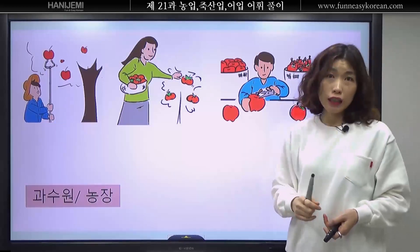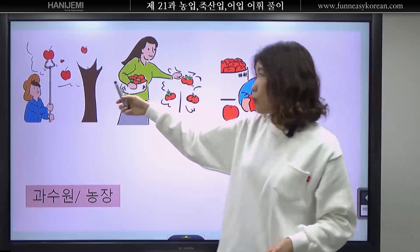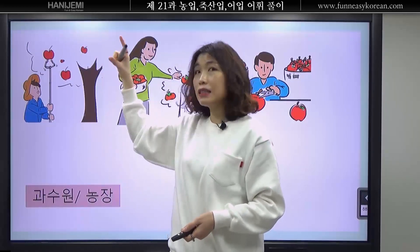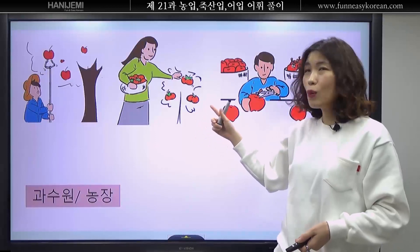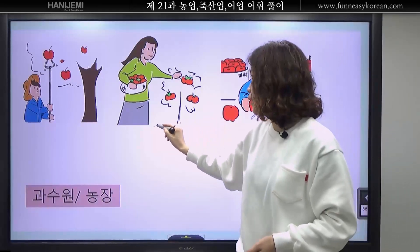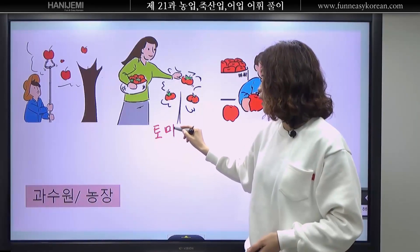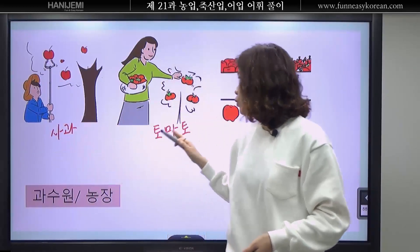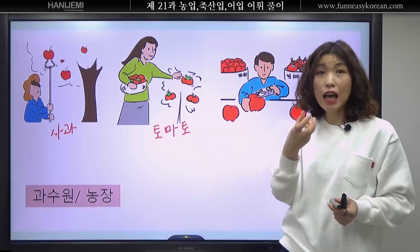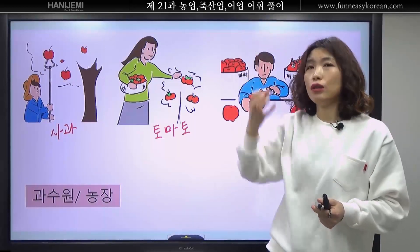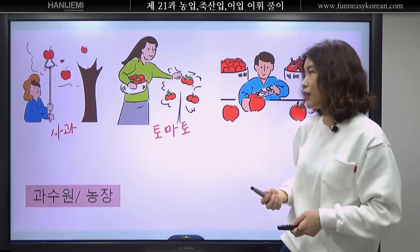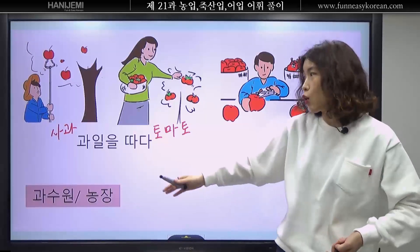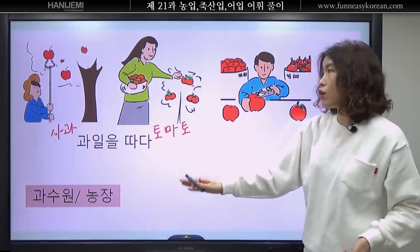농장에서는 무슨 일을 해요? 지금 보니까 이거 뭐죠? 사과. 사과를 뚝 따다, 사과를 따요. 그리고 이거는 토마토네요. 다 익었어요, 이제 먹을 수 있어요. 그러니까 이제 똑똑 따다입니다. 과일을 따다. 사과를 따요, 토마토를 따요. 과수원에서 과일을 땁니다.